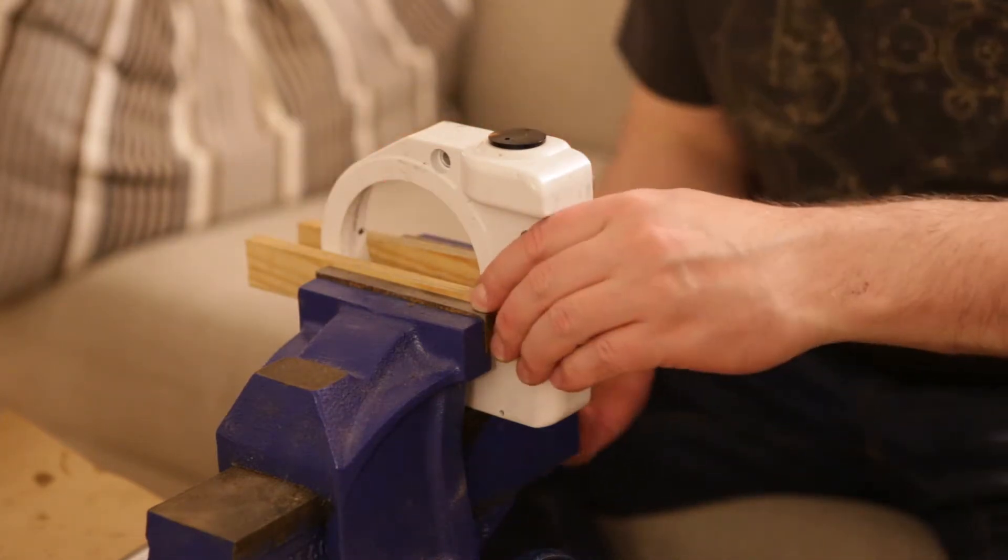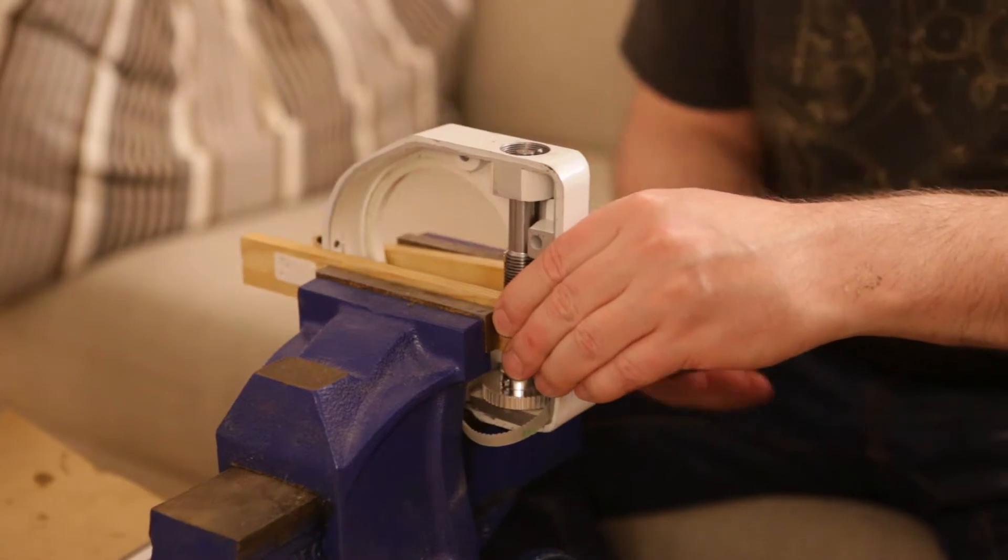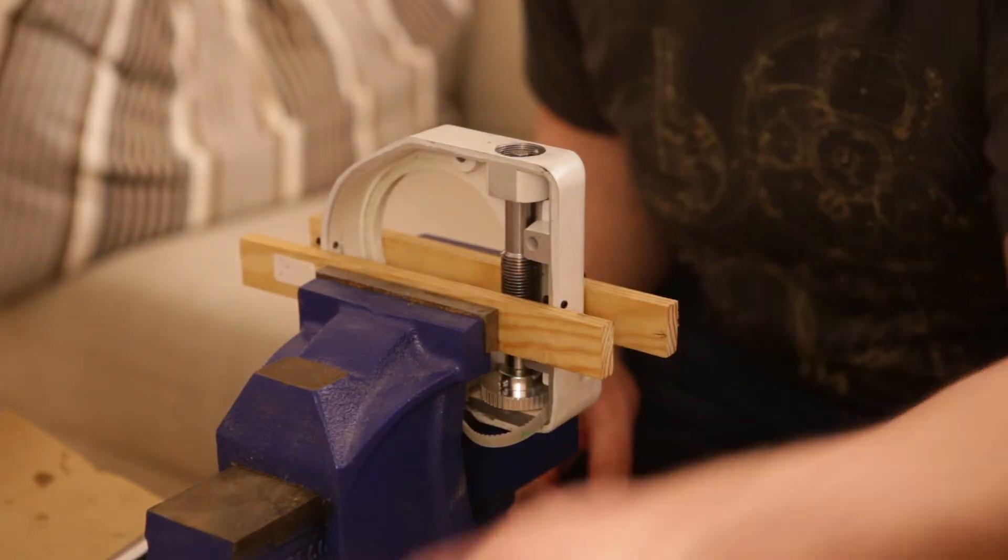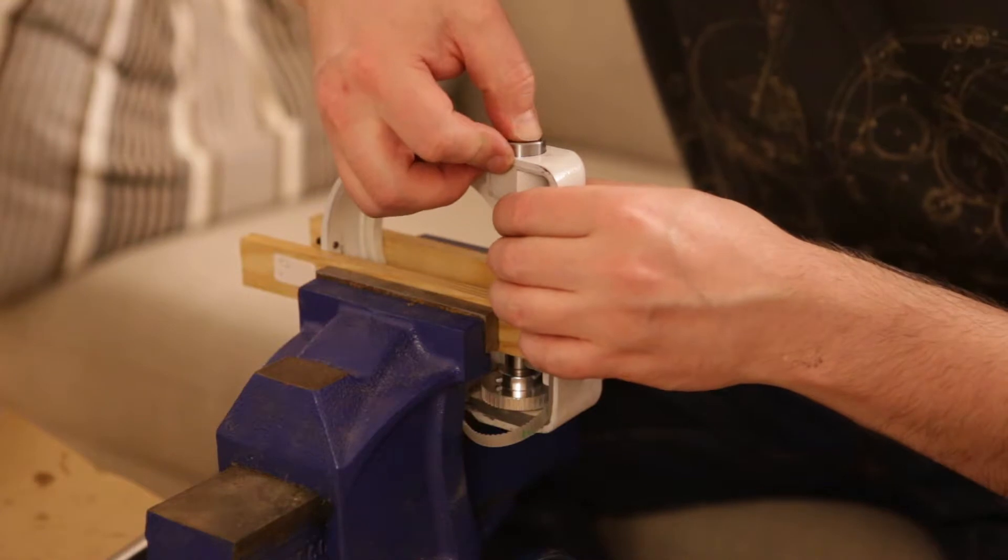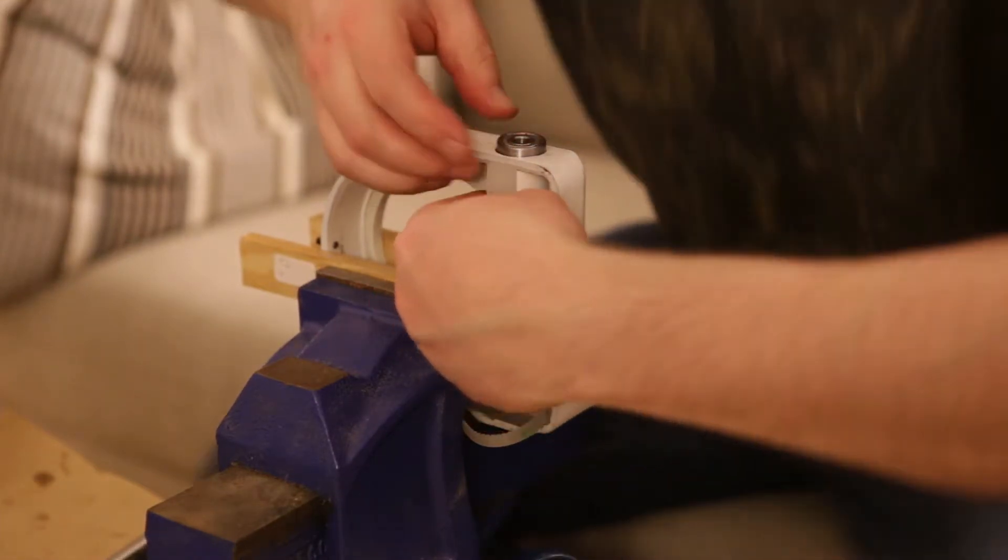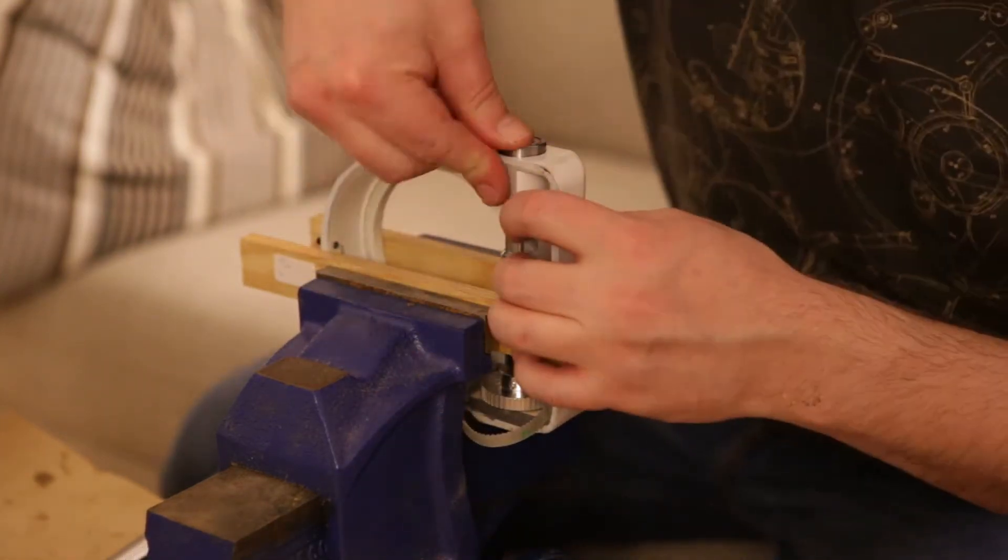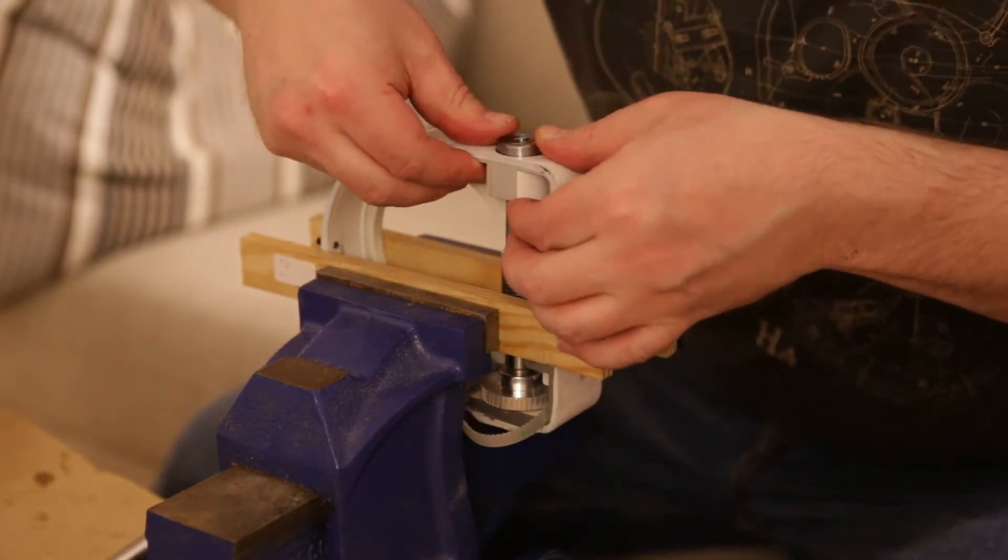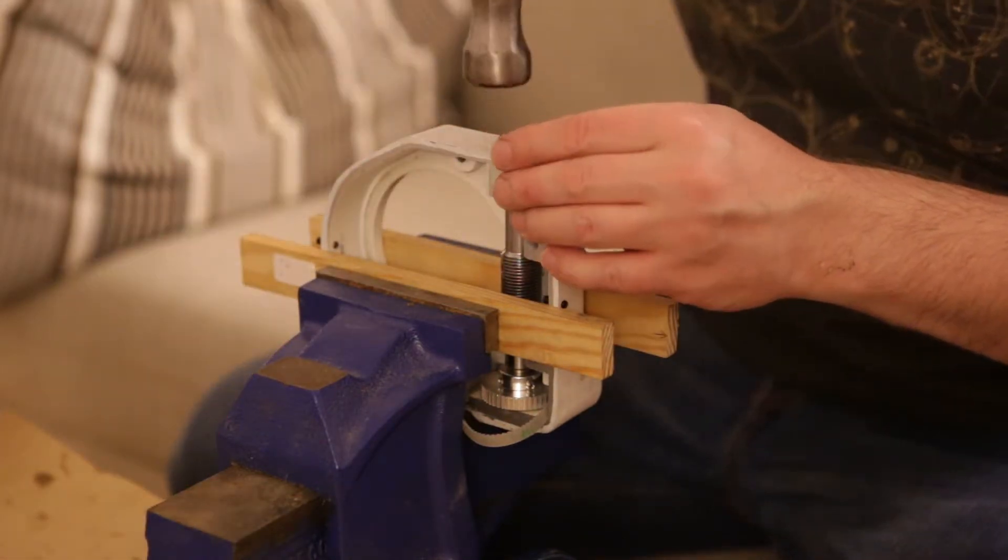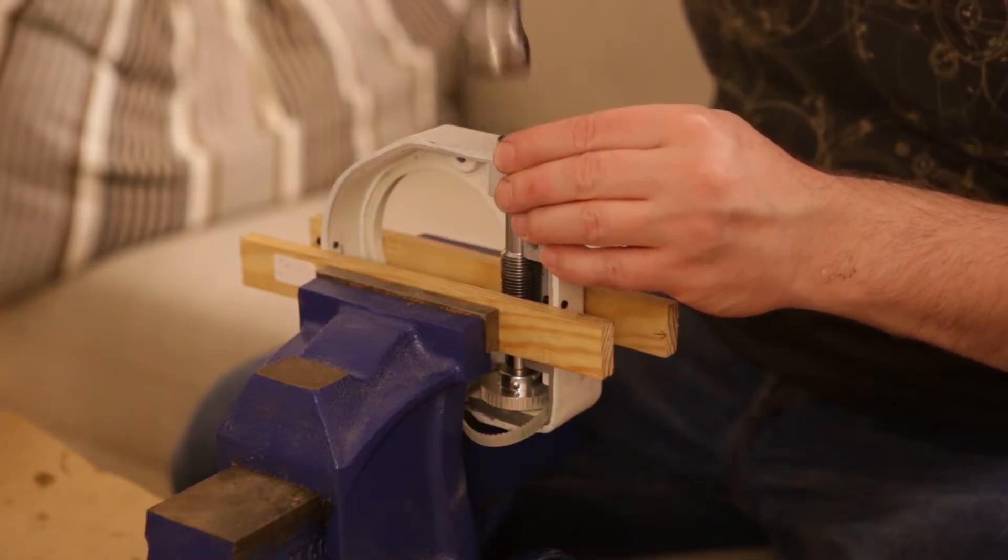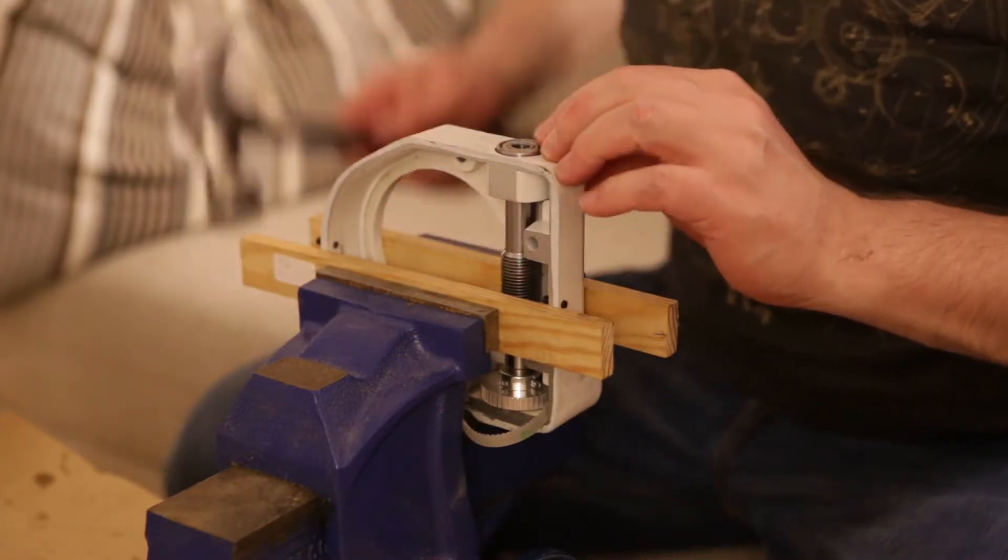I'm going to flip this thing over again. Let's pop the bearing back in. And again, if you get it aligned properly, it should be fairly easy to get this back on. It doesn't want to go. Gently tap with the hammer. It's going in.